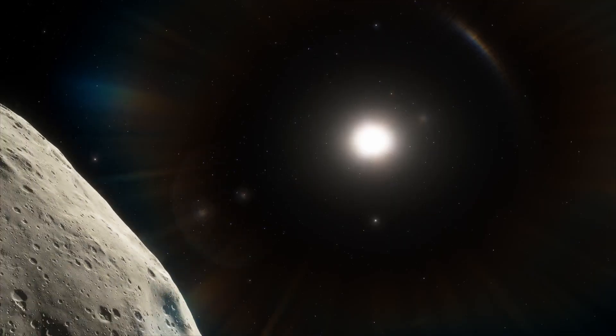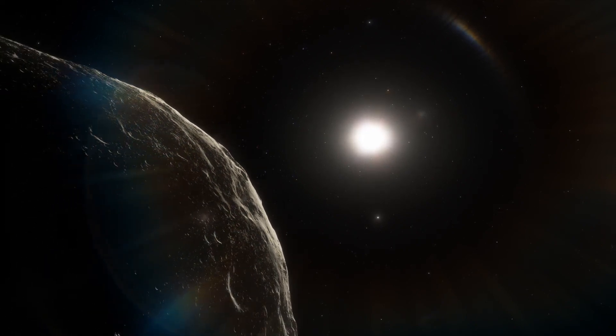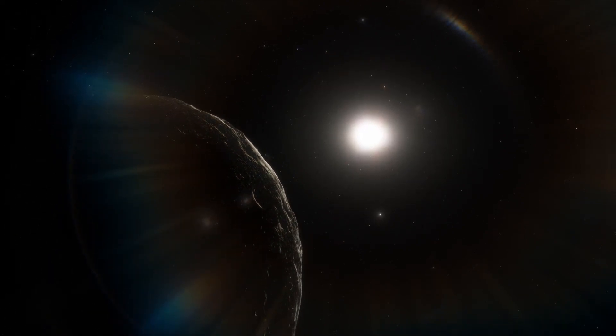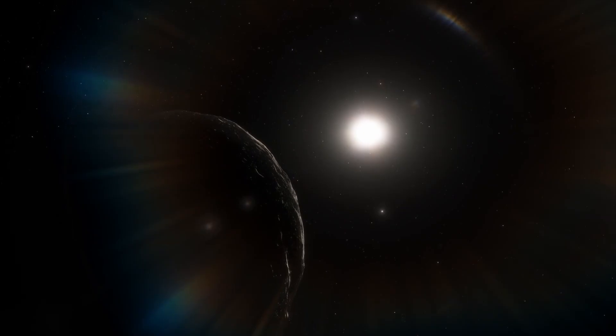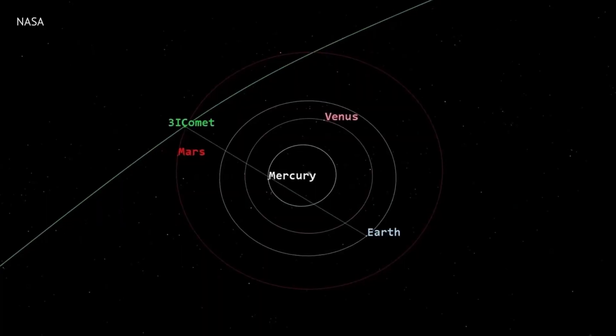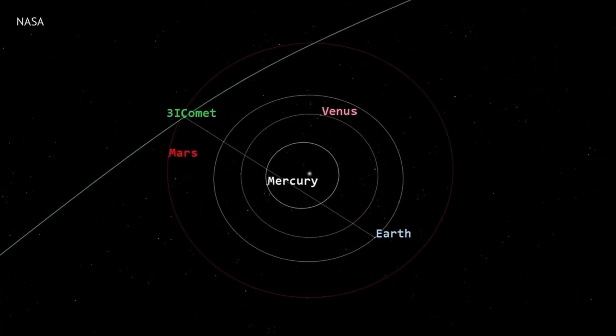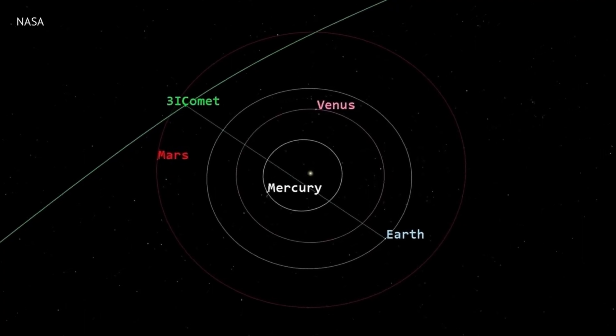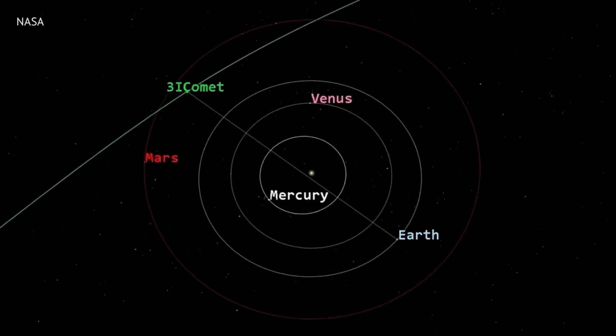The efficiency of this route is staggering. If you were an alien civilization and you wanted to scan our solar system, this is exactly how you would fly. You wouldn't just pass through. You would hit the gravitational keys to maximize your speed and your coverage. You would fly past the most interesting moons—Europa, Enceladus—places that might harbor life.